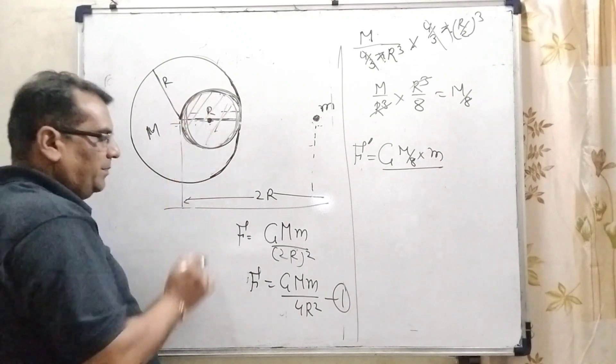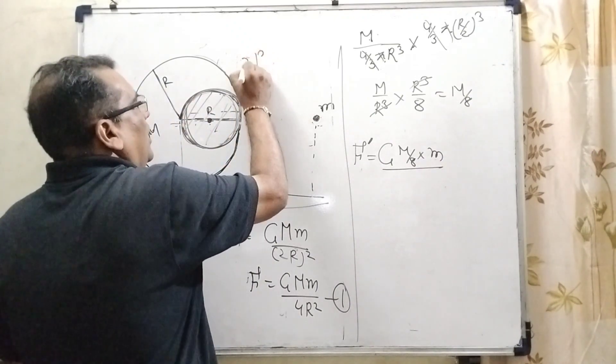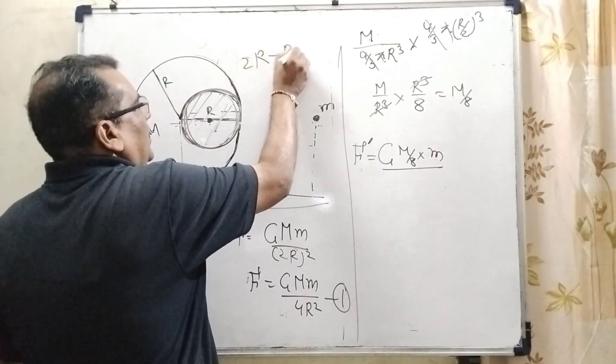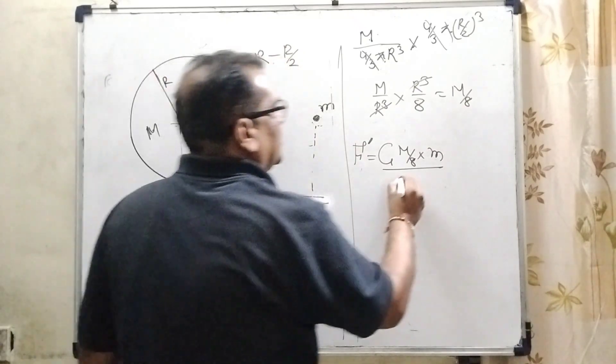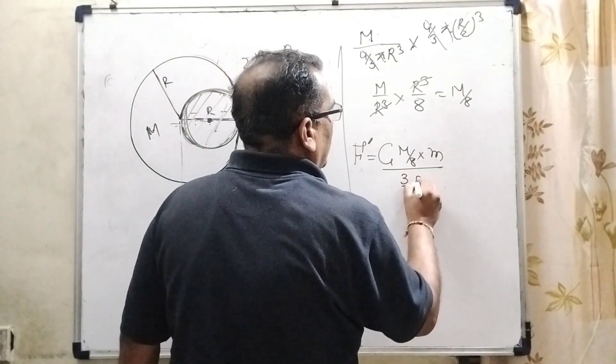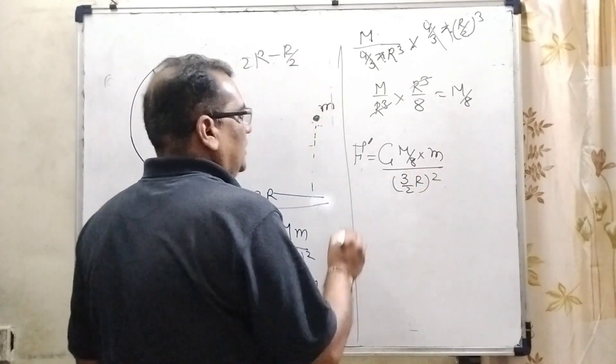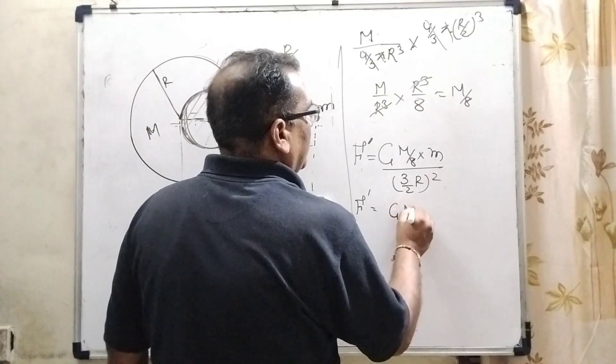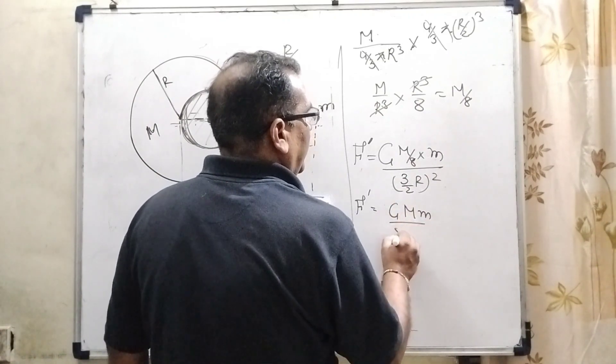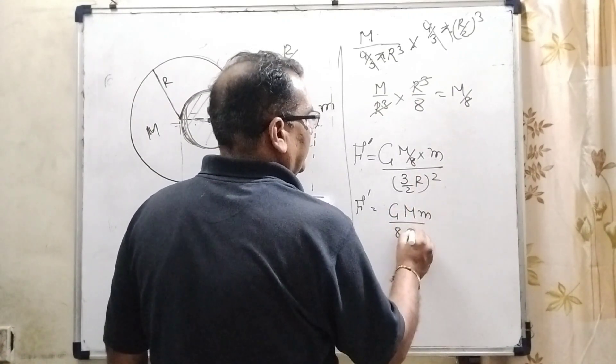This is R by 2 subtracting. Then 2R minus R by 2. 2 to the 4, 4 minus 1, 3 by 2. So 3 by 2 R whole square. Then how much? F dash equals G M small m by 8 into 3 square means 9.